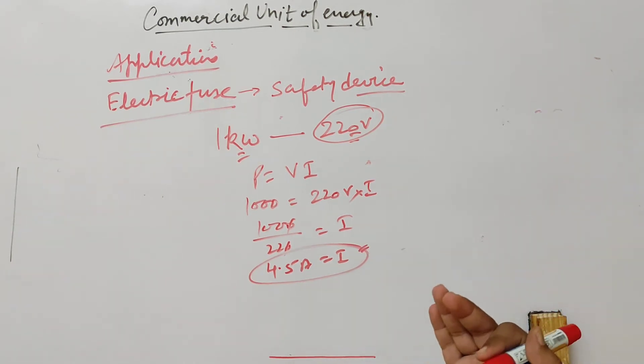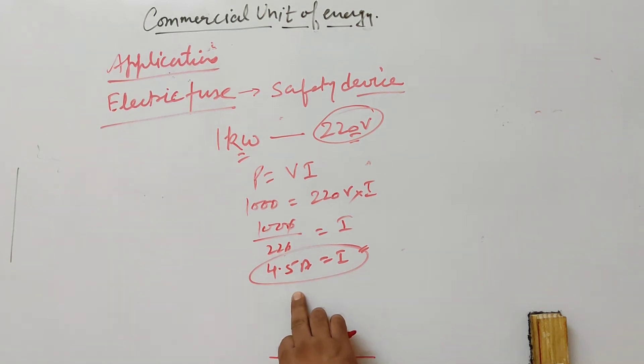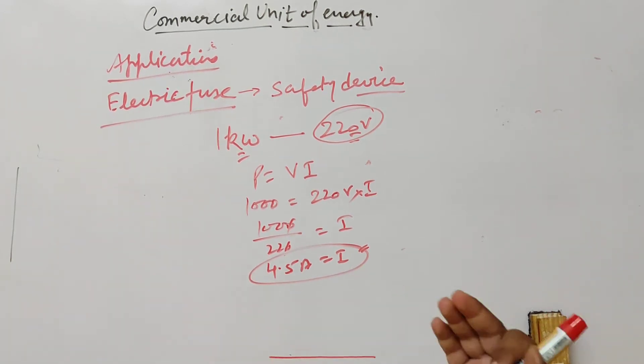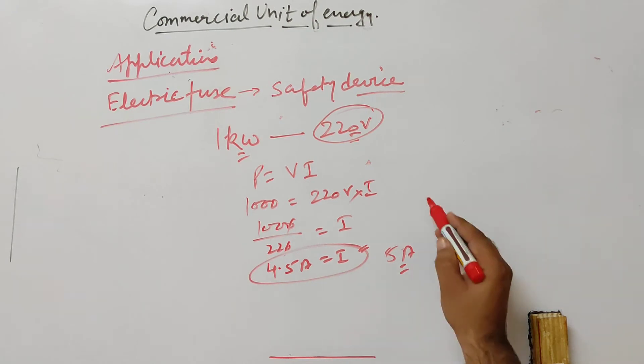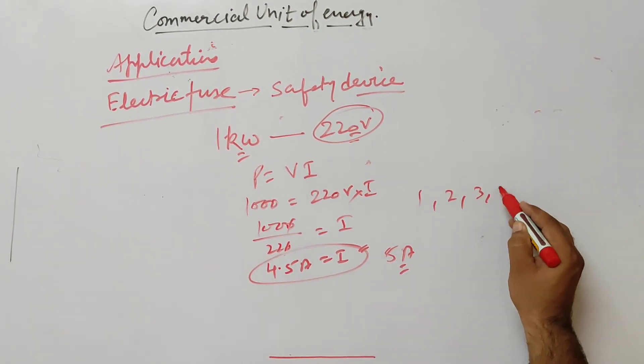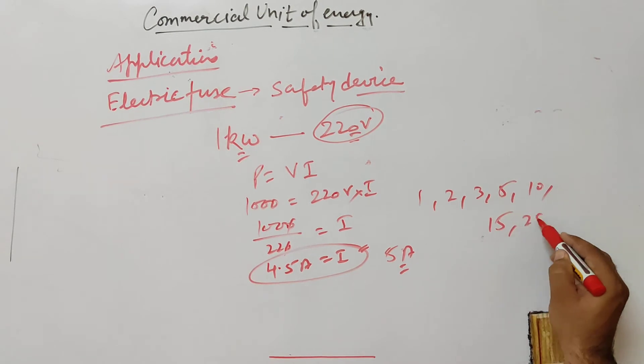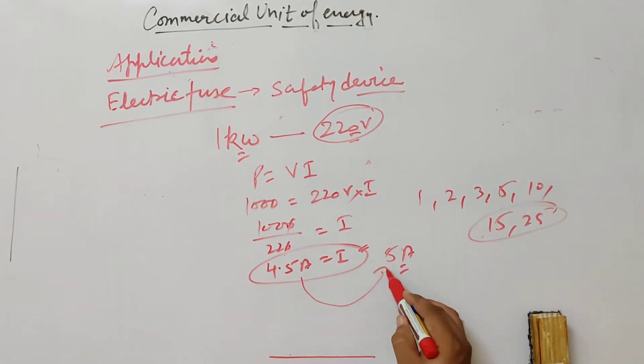The maximum current which an electric iron will draw is 4.5 ampere. You don't get this exact fuse rating. Standard ratings are 1, 2, 3, 5, 10, 15, 25 ampere. So you can use 5 ampere rating fuse.